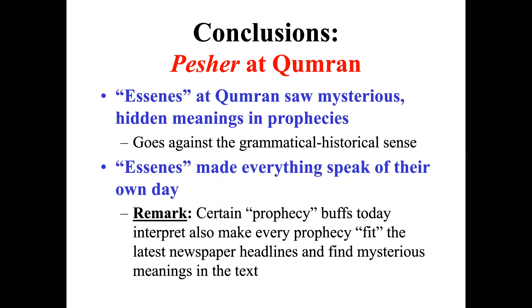As we look at these Peshers at Qumran, we see that these Essenes saw mysterious hidden meanings that go beyond the original meanings in the prophecy. In Habakkuk, when it says the wicked encompass the righteous, it was talking about what was going on in Habakkuk's day — it had nothing to do with the Qumran community's time. Their interpretation goes against the grammatical historical sense. What they tended to do instead was to make everything speak of their very own day.